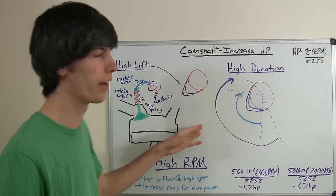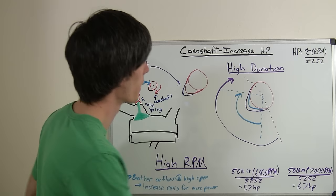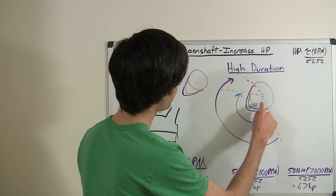Now, another thing you can do is change how long that valve is open. So that's high duration. So if you've got the camshaft here, and then the blue lobe is the one with the stock duration, we'll say.